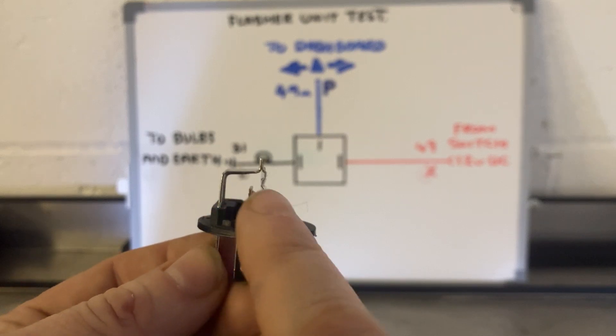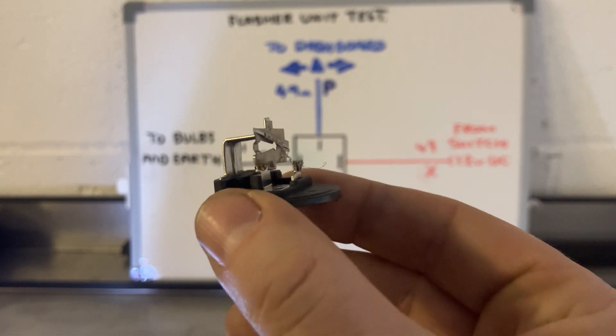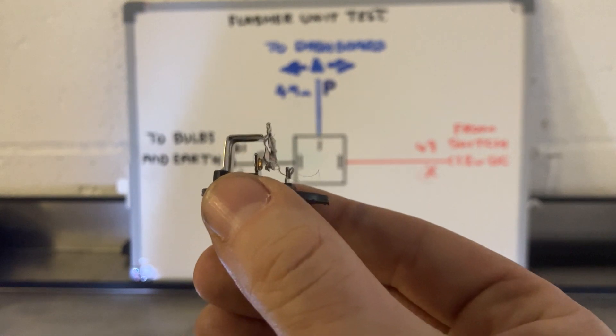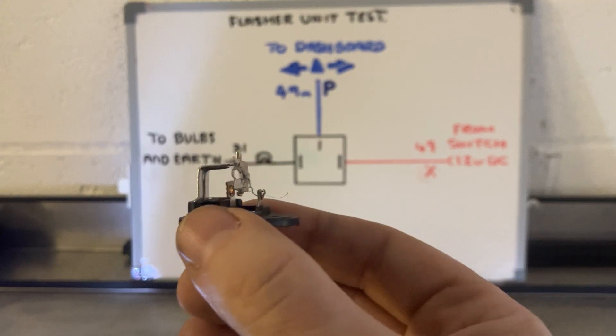In the UK, at least, indicator flash rate should be 60 to 120 times per minute. So that's how quickly it will do it. So nice, simple test for this one.